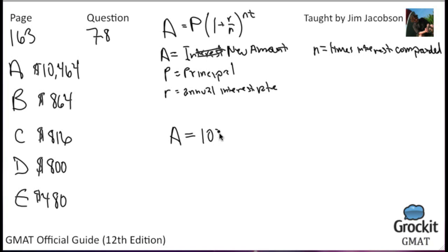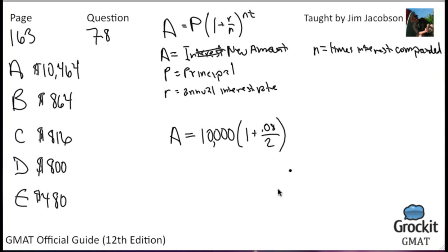Leona's principal is $10,000. The annual interest rate is 8%. Since compounding is semi-annual, it is compounded twice per year, so N equals 2. The time period is one year, so T equals 1. We can now plug into the compound interest formula.